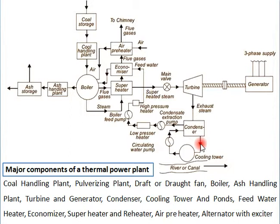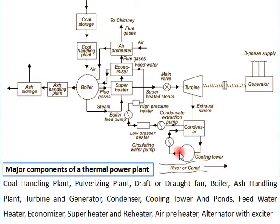After passing through the condenser, the circulating water temperature is raised. If we want to use this water again and again, we need to cool it. The cooling tower is used to reduce the temperature of this circulating water with the help of atmospheric air. The work of the cooling tower is to reduce the temperature of the circulating water.